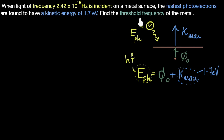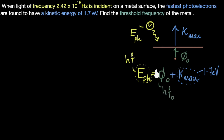We are asked to calculate the threshold frequency — the minimum frequency needed for photoelectric effect. The work function gives me the minimum energy, and from Planck's equation, if I know the minimum energy, I can calculate the minimum frequency. So I have everything needed. Why don't you pause the video and try this yourself before we solve it together?